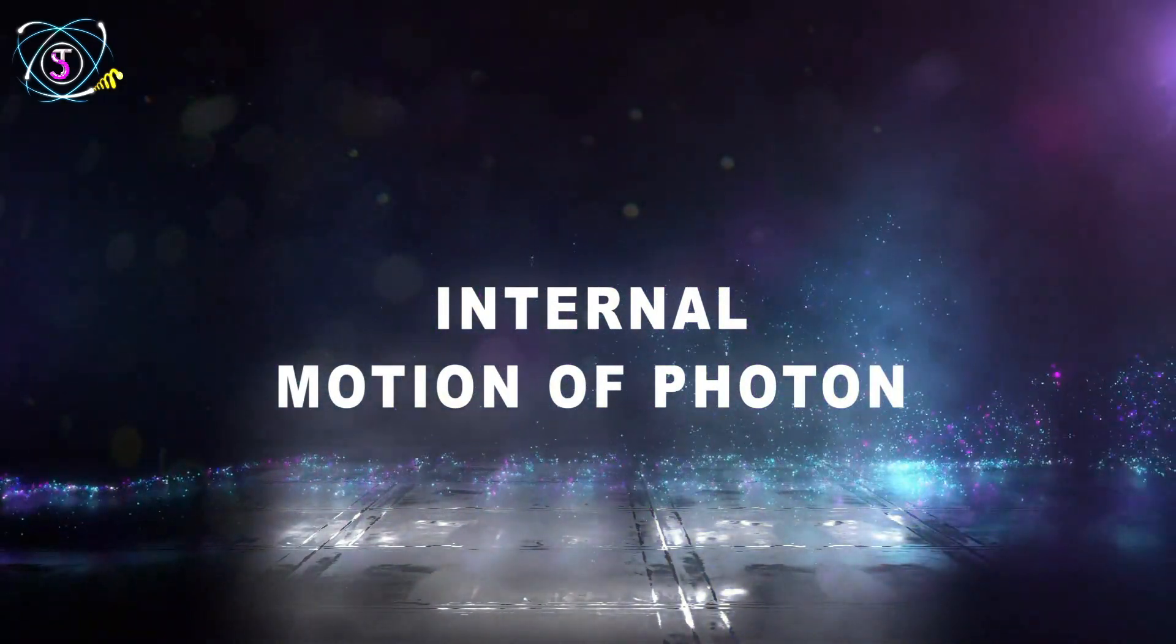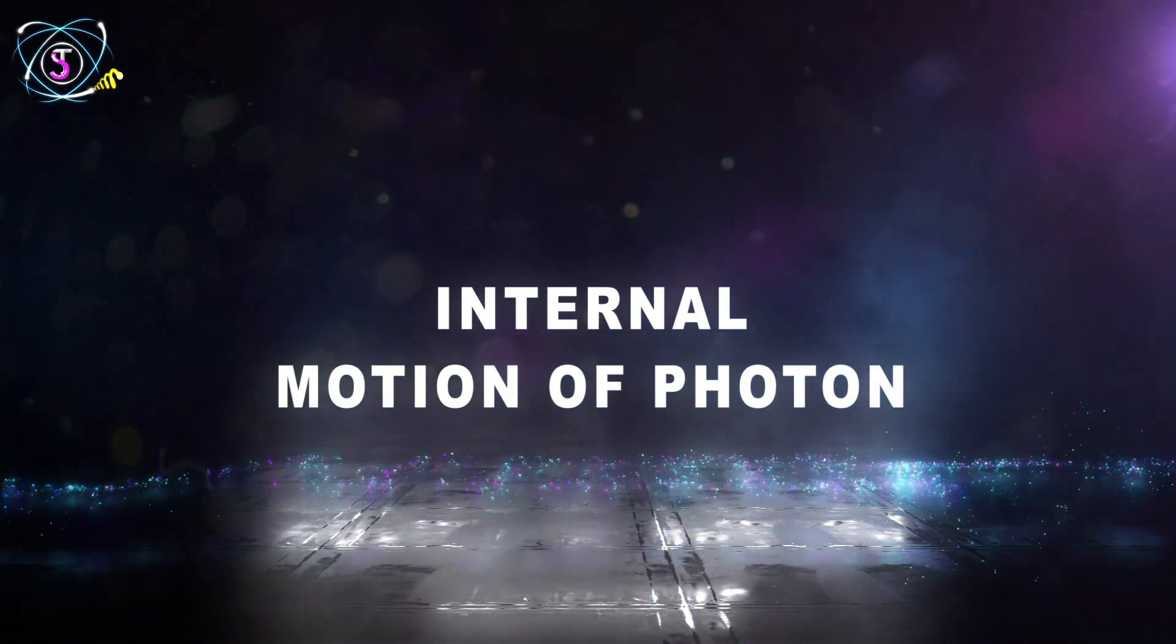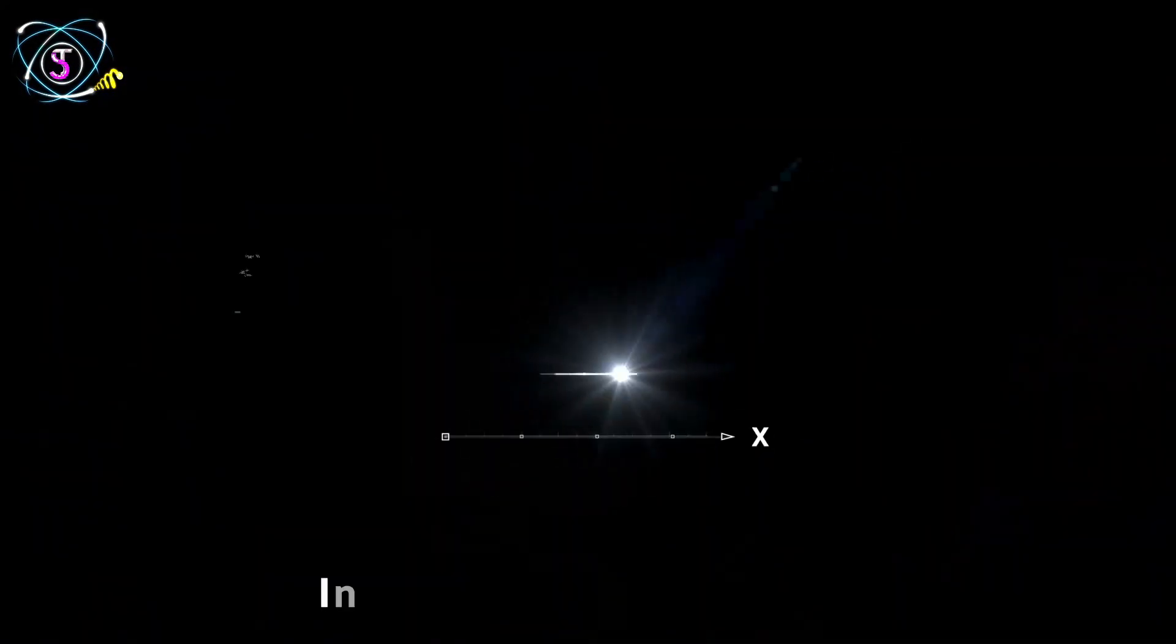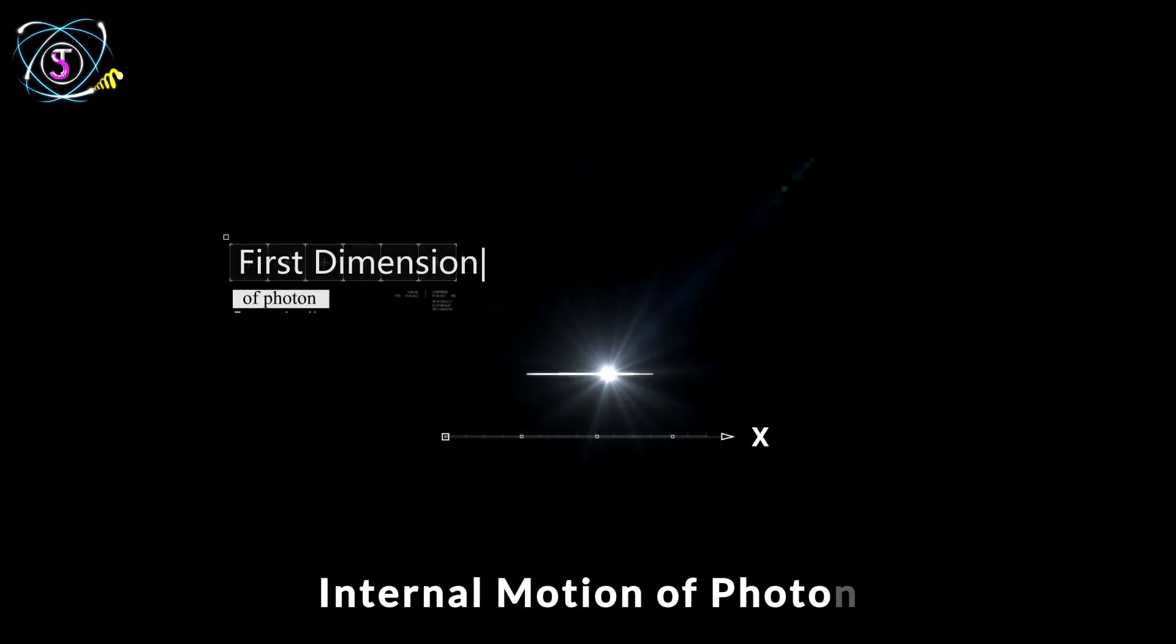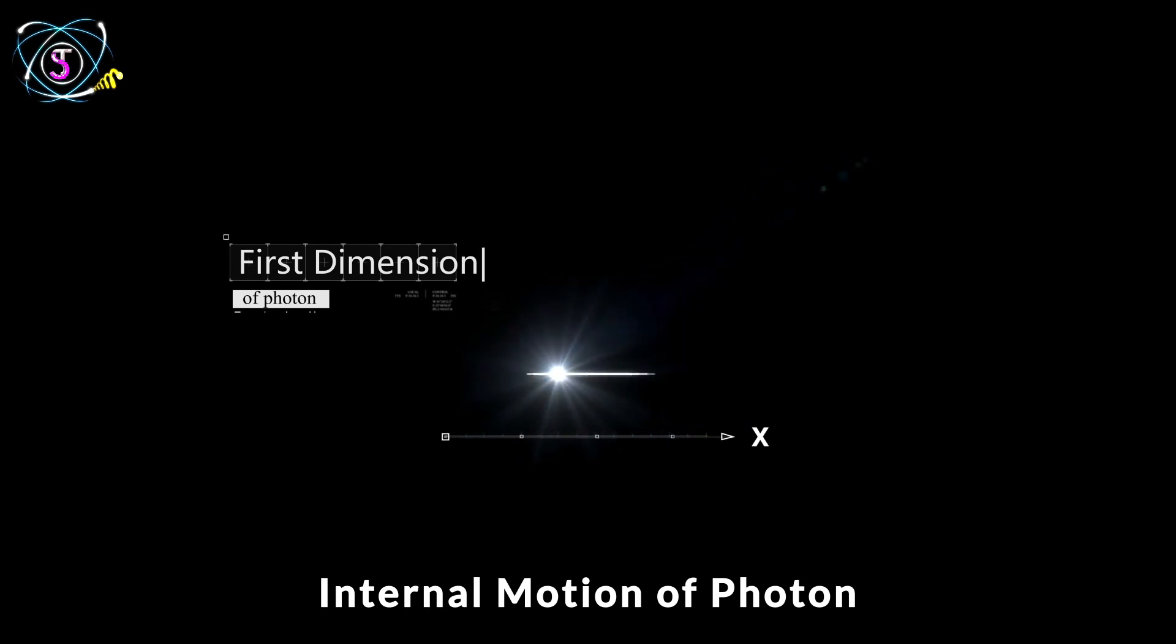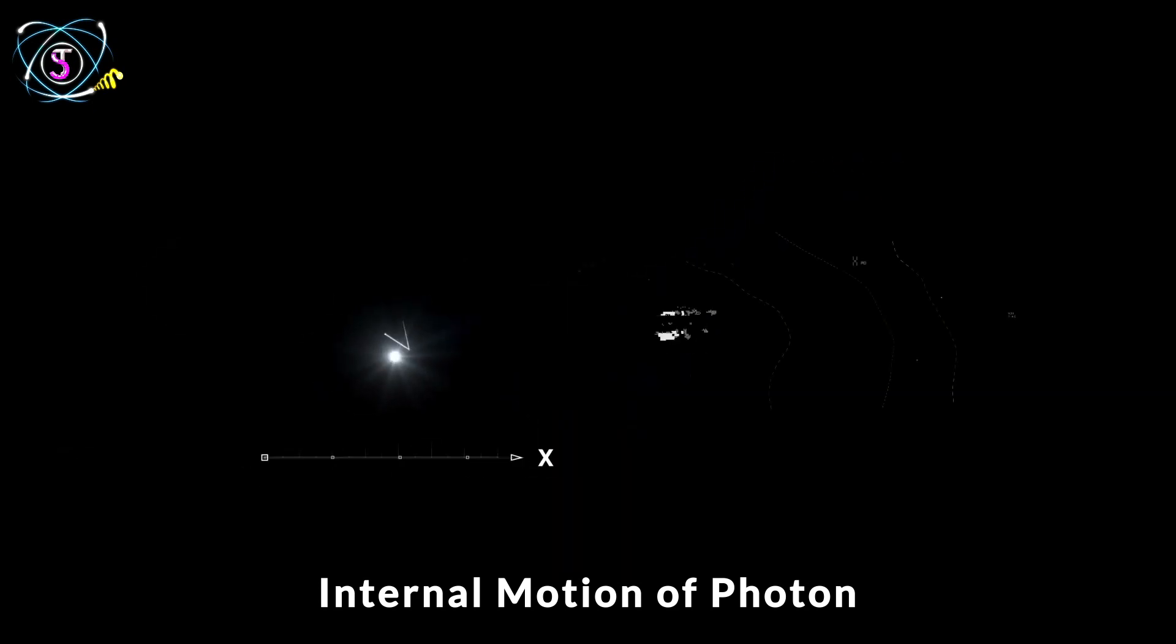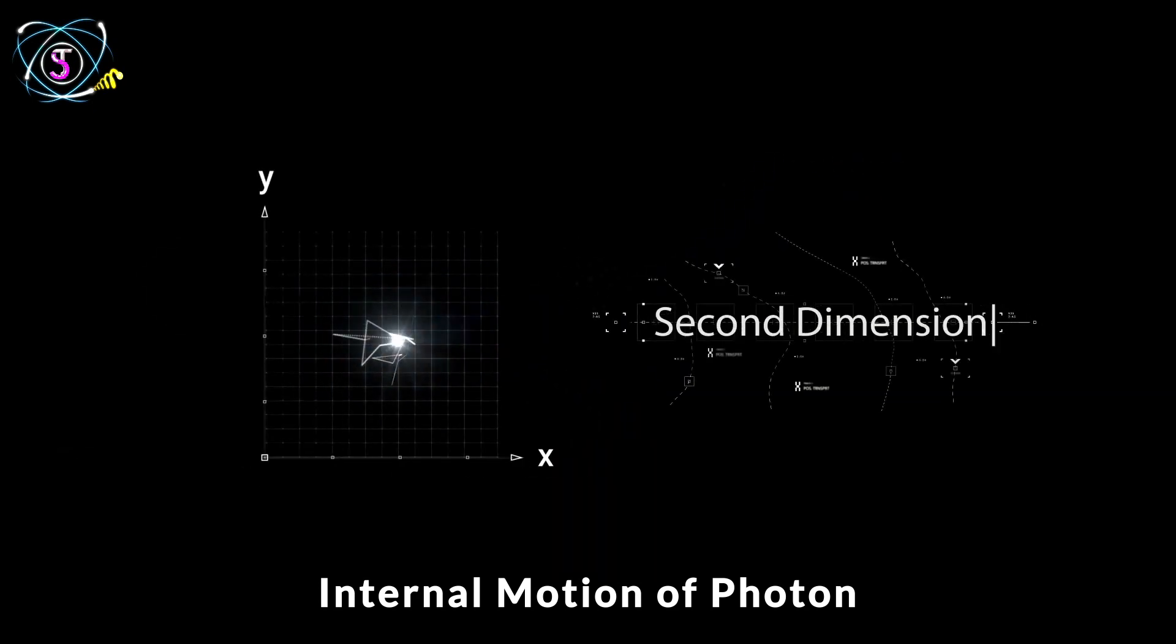The internal motion of photon. Photon has an internal motion too. This motion also includes two parts. The first one is vibrational which leads photons to have small movements in space and adds three more dimensions.